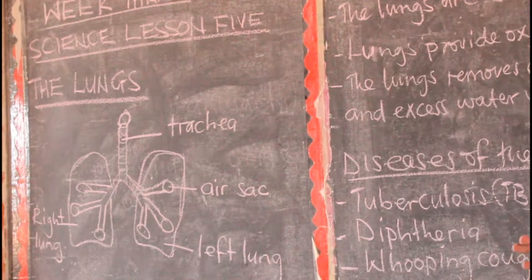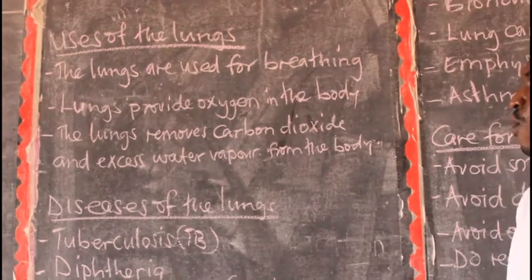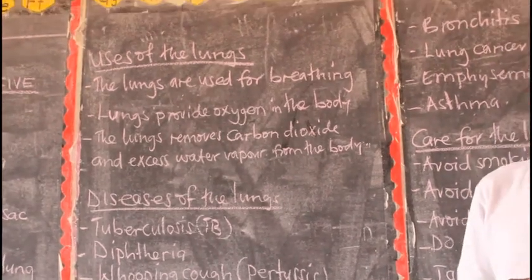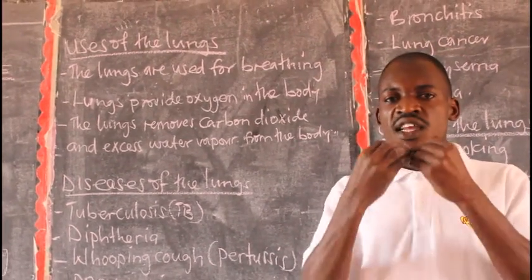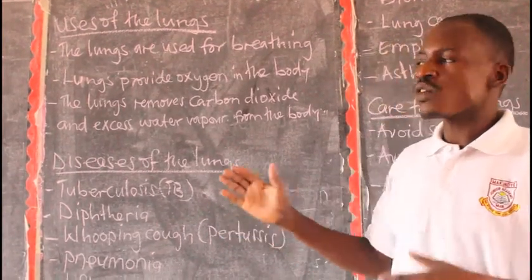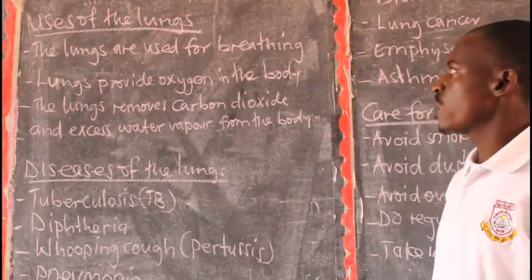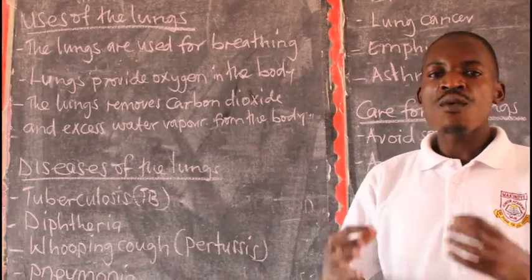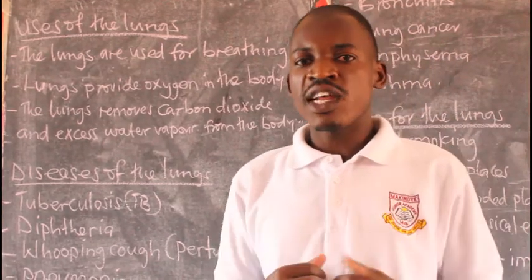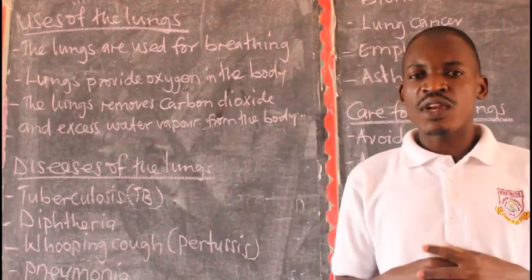Now let's look at the uses of the lungs. The lungs are very important in our bodies. First, the lungs are used for breathing or gaseous exchange — to take in oxygen and bring out carbon dioxide. We also need the lungs to provide oxygen in the body. Our body requires oxygen for it to carry out the process called respiration. Without the lungs to supply that oxygen, the body cannot carry out respiration.